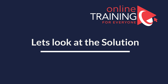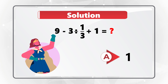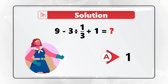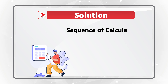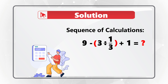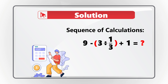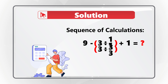The correct answer is choice A, which is 1. But why? If you look at the expression closely, you will see that the first part to be calculated is the division — dividing 3 by one-third. To emphasize this, I put this expression into red parentheses.